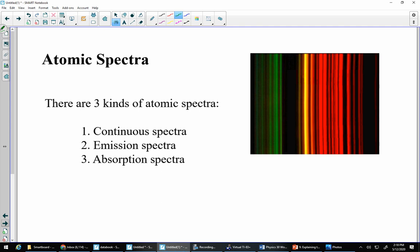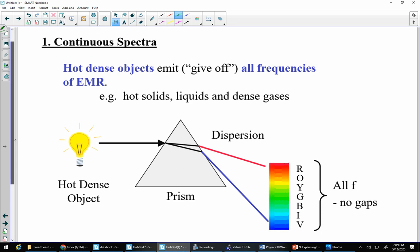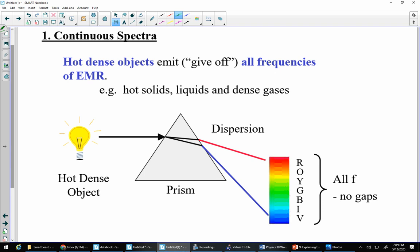Let's go through the things we need to know. There are three different kinds of atomic spectra. There are continuous, emission, and absorption spectra. So the first one to talk about is continuous.